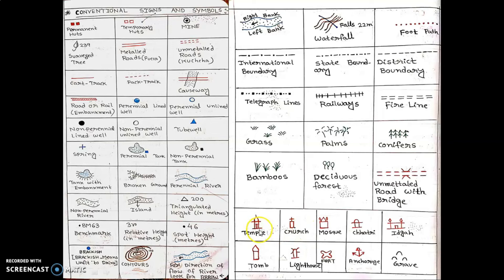The symbol of a river is shown in blue. Religious symbols shown in red include temple, church, mosque, Chhatri, and Idkha. There is also the symbol for anchorage — anchorage is a place for refuge.